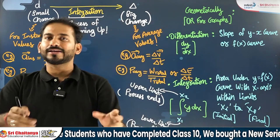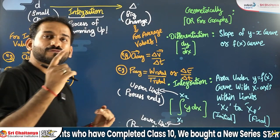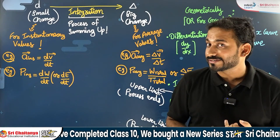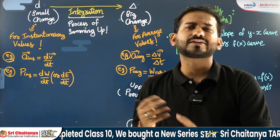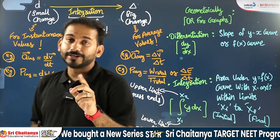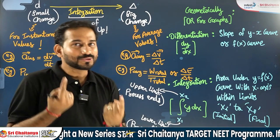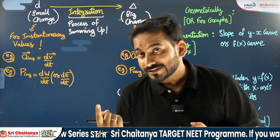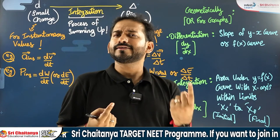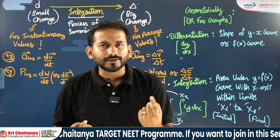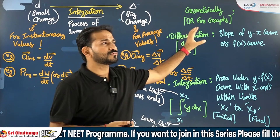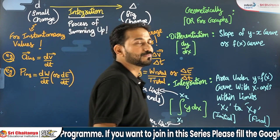In physics both types of changes are required. The branch of mathematics that deals with changes we call calculus. Calculus has many other applications also, but in physics it is primarily used for dealing with changes. There are two types of calculus: differential calculus, which we call differentiation, and integral calculus, which we call integration.